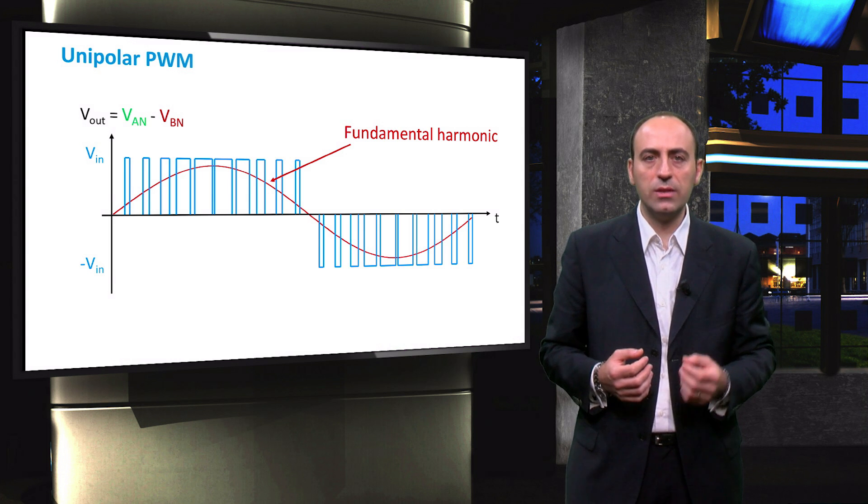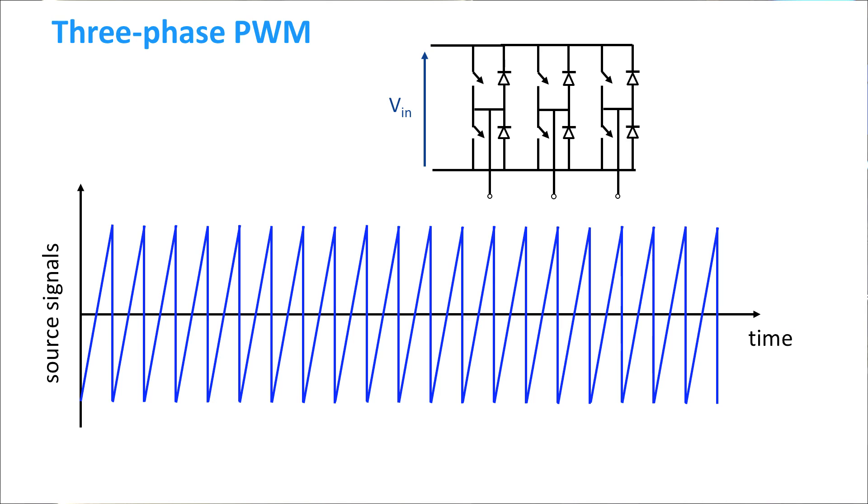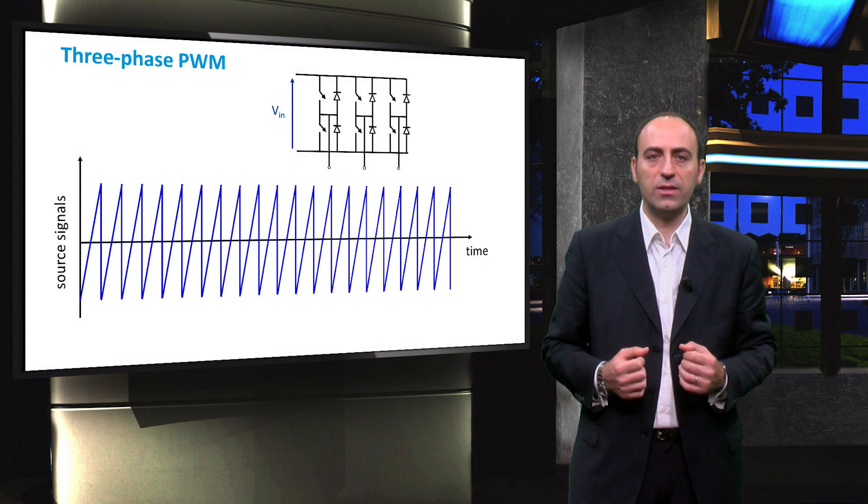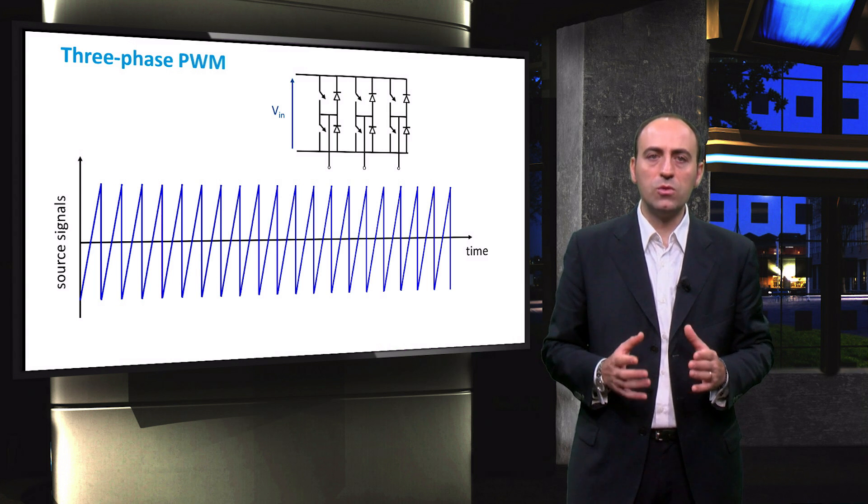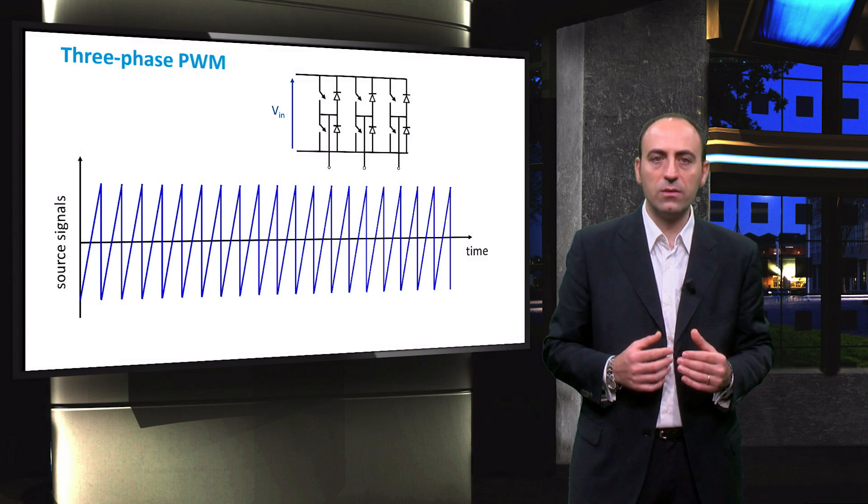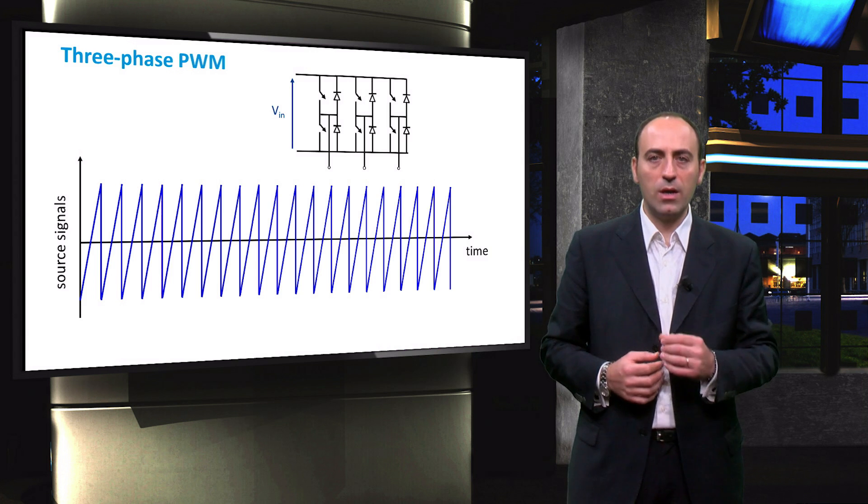In applications such as uninterruptible AC power supplies and AC motor drives, three-phase inverters are commonly used to supply three-phase loads. It is possible to supply a three-phase load by means of three separate single-phase inverters, where each inverter produces an output displaced by 120 degrees.